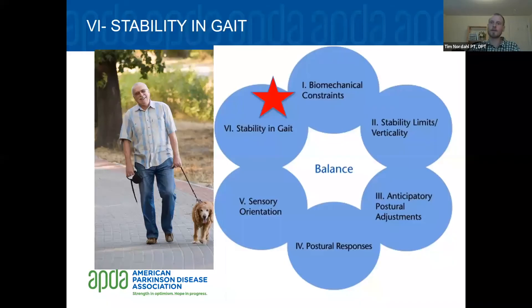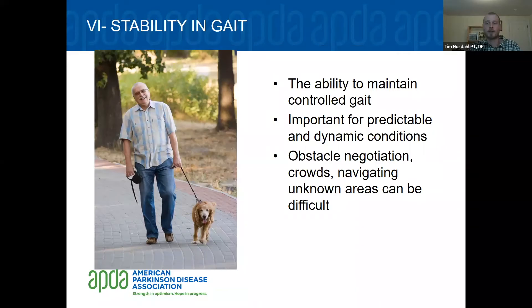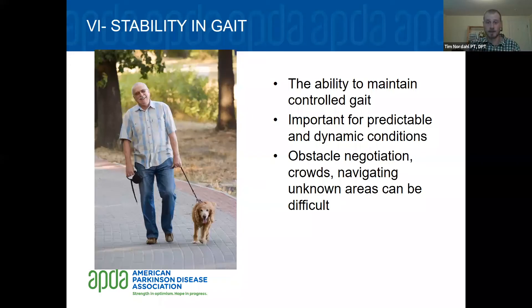The last component on our framework is stability and gait. Parkinson's has many known effects on walking, such as slower speed or shorter shuffling steps. Beyond how well someone walks, we also need to consider how well they can maintain stable walking in real-life conditions — obstacle negotiation, getting over a curb, walking through crowds, navigating unfamiliar areas, or sudden unexpected events like a dog lunging after a squirrel. We rarely walk in a wide open, perfectly flat area with no interruptions or distractions.